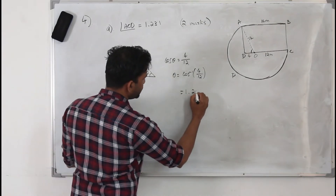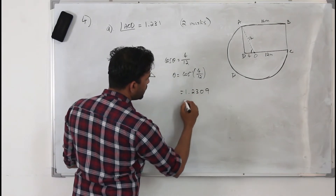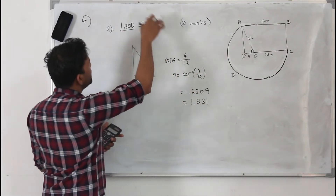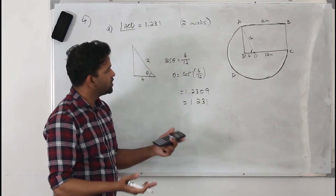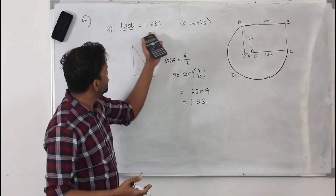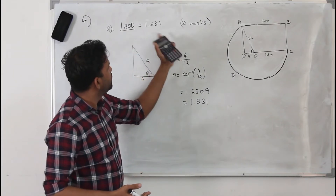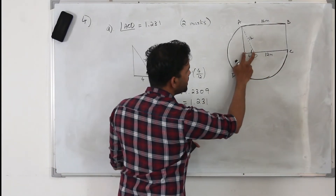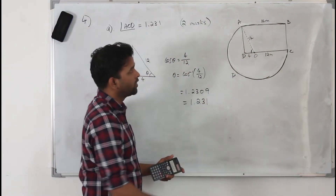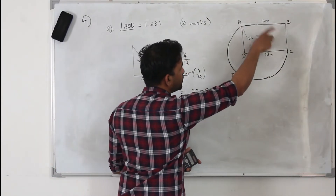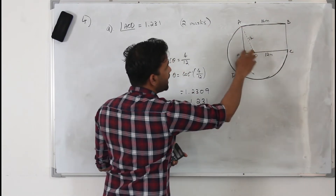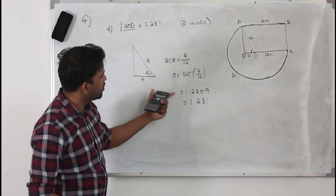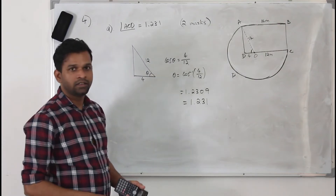Cos inverse of 4 over 12 is 1.2309, and rounding to three decimal places gives 1.231. The good thing is you are already given the answer — you just need to prove it. Find this little length which is 4, note this is also the radius so it is 12, take this right angle triangle, use cos theta, and you get this angle.